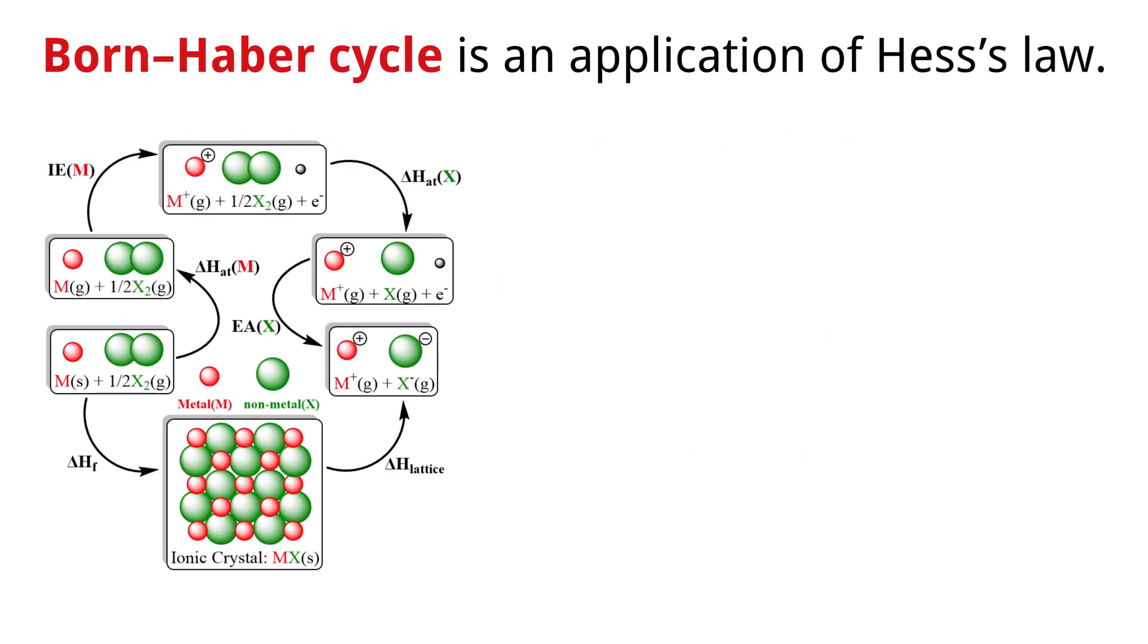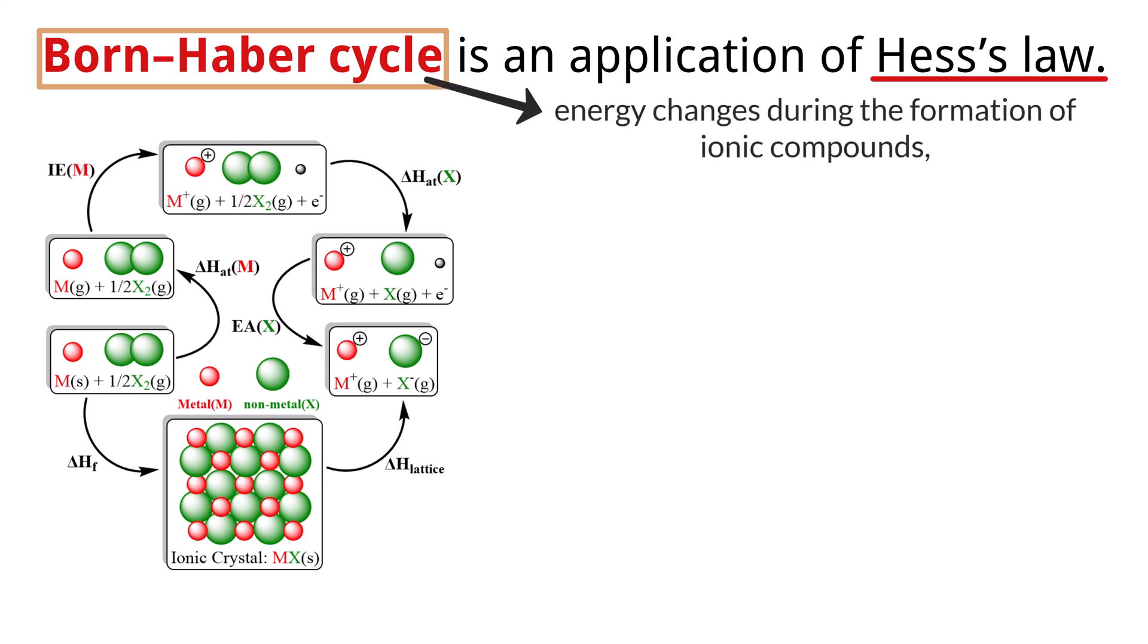Now that we've explored examples of enthalpies of combustion and formation using Hess's law, we can delve into the Born-Haber cycle. This cycle is an application of Hess's law that illustrates the energy changes during the formation of an ionic compound and is vital for the calculation of lattice energies, since they cannot be determined directly by experiment.